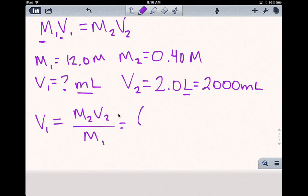M2 is 0.4, V2 is 2,000, and this is all over 12. Your calculator tells you that the starting volume is